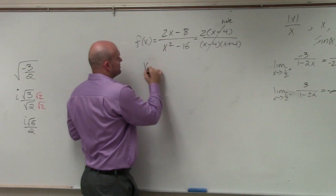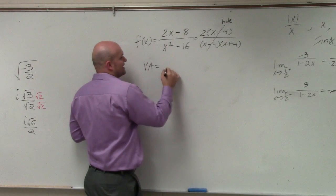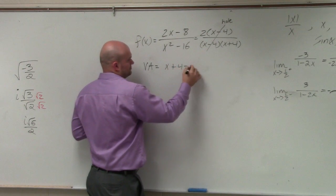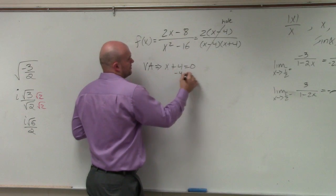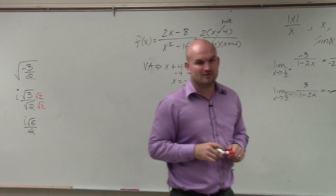So to find the vertical asymptote, I'm only going to take this discontinuity and set it equal to 0. So the only asymptote that occurs is at negative 4.